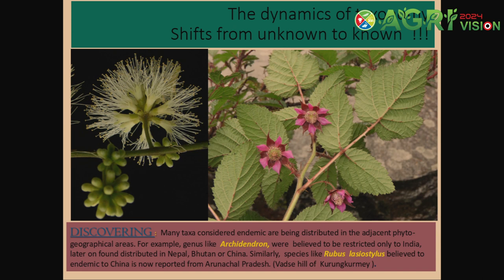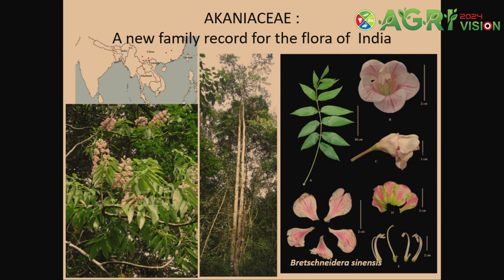Similarly, Rubus is one of the most important species that can be brought into commercialization or fruit cultivation. We have found that a minimum of 29 species of Rubus have been eaten by the traditional population. Echinaceae is one species recently collected and described from Arunachal Pradesh, and is a very important species for timber production in tropical forests.